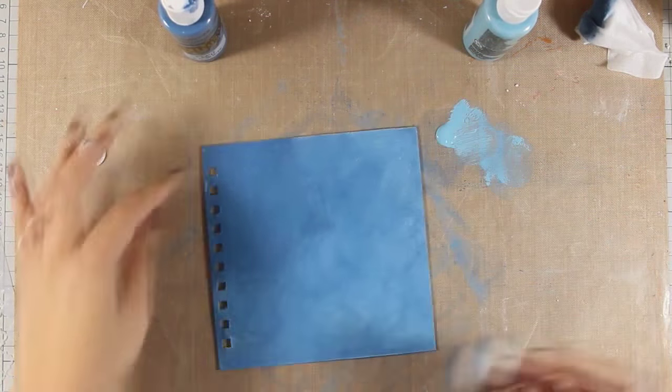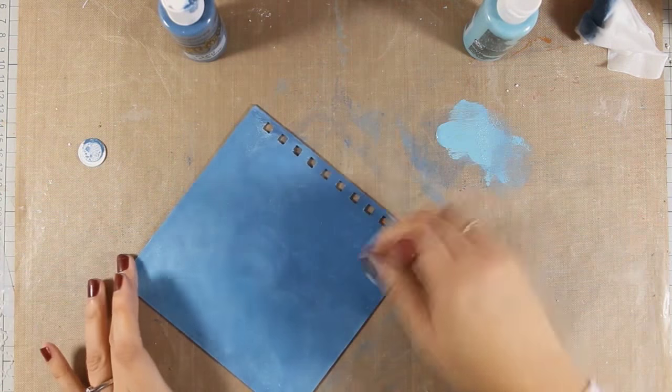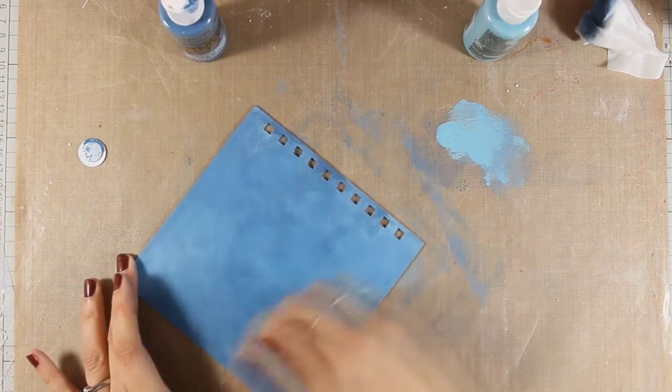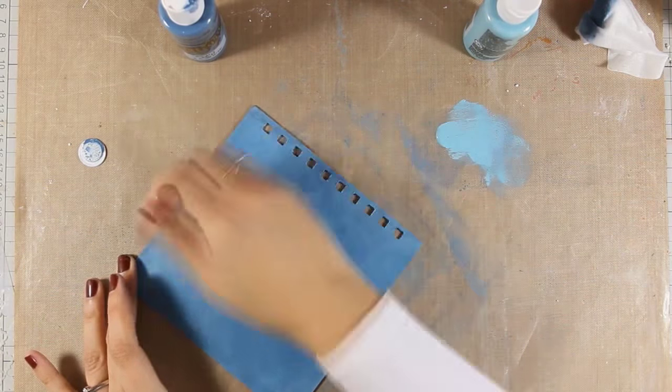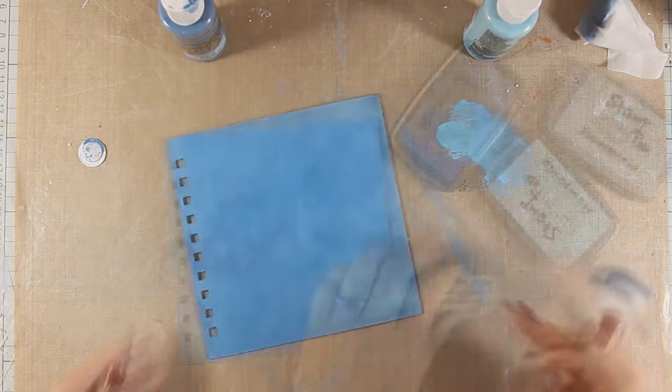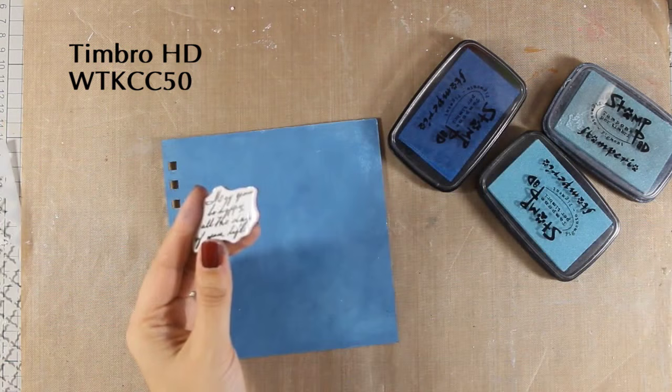As always you can find a full list of all the supplies as well as the number of the colors that I am using just below the video in the description area. Now I have blended both the colors and I really like the outcome so I will go ahead and stamp some text.